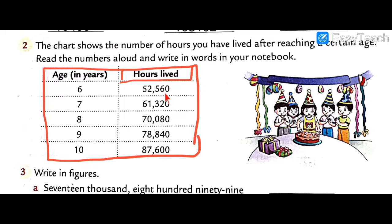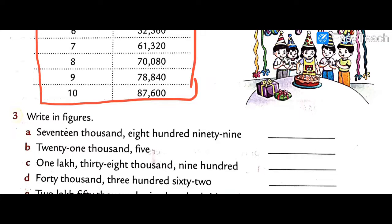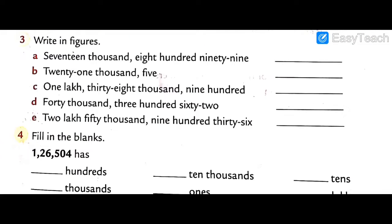For example, age six: 52,560. Age seven: 61,320. Age eight: 70,080. Age nine: 78,840. Age ten: 87,600. I hope you understand. You must draw this chart, write both the digit and the number in words. Don't forget to write in words.